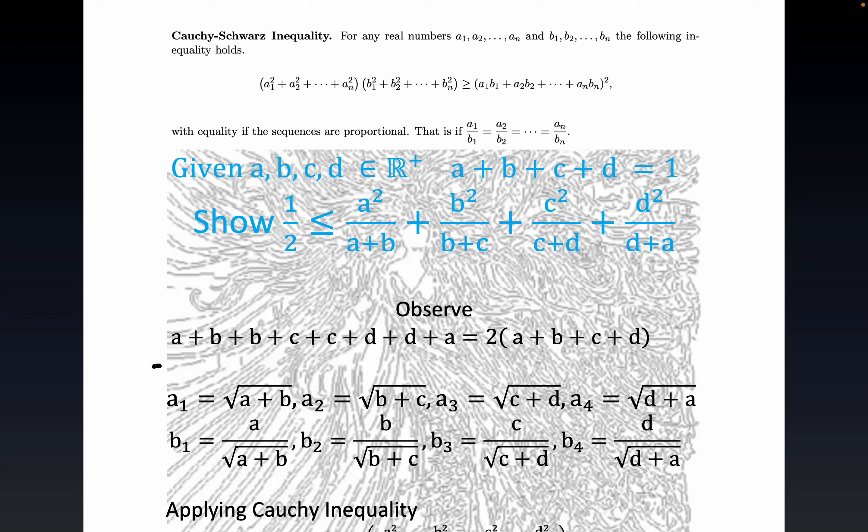Here I'm going to write something down to motivate our choices. Notice that the product here, a sub 1 times b sub 1, these guys are conveniently selected so a sub 1 times b sub 1, you can see by the way everything's arranged.